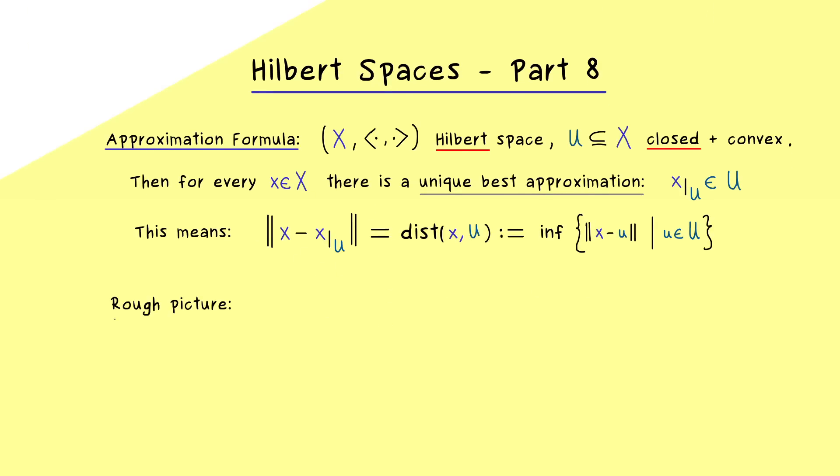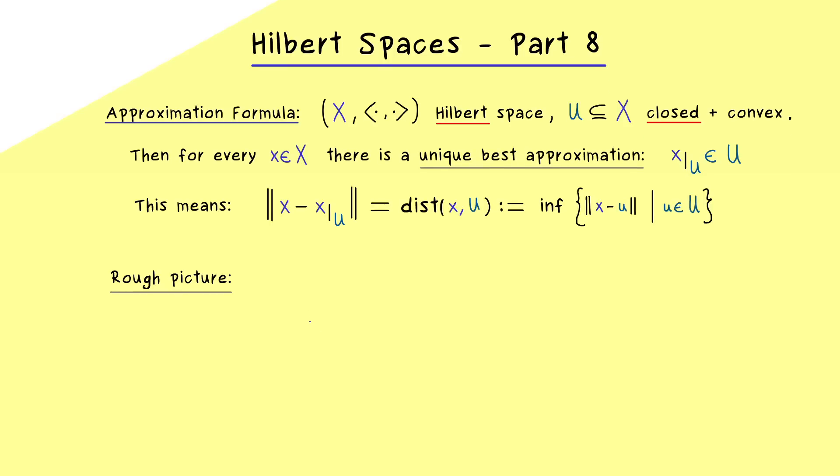And I would say for the whole video it's good to have a rough picture in mind. Just imagine that we have our vector x here. And in order to make it simple let's represent our subset U by a line. Indeed this would be the visualization when we have a subspace. And now the minimal distance is what we would find here. And the claim of the approximation formula is that this one is given by a difference vector. Hence our special element is what we find here inside U. So this vector is our unique best approximation.